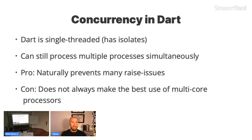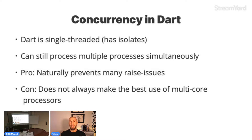The benefit of single-threading is that it naturally prevents many race conditions. When you have multiple threads talking to each other there's a risk of deadlocks, which can be really hard to handle. The drawback is it may not always use a multi-core processor as efficiently as possible. Solutions include using isolates in Dart — which are basically threads with limited inter-communication — or starting multiple processes on a single machine to use all available performance.